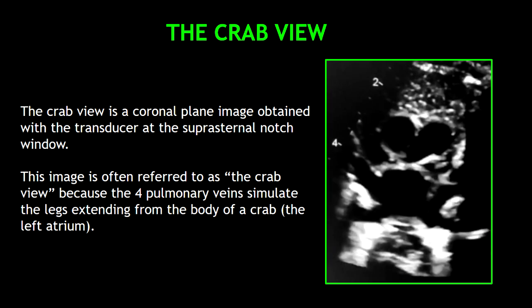The CRAB view is an image obtained with a transducer at the suprasternal notch window. This image is often referred to as the CRAB view because the four pulmonary veins simulate the legs extending from the body of a CRAB, which in this case is the left atrium.